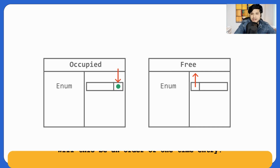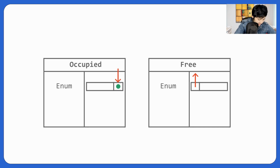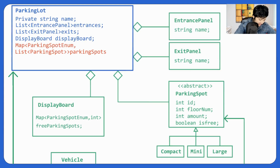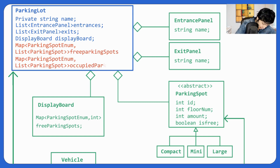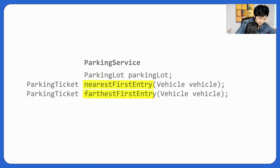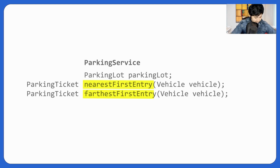This would actually be O(1) time for entry. So we need to add two more data members to our parking lot: one for free parking spots and one for occupied parking spots. This resolves things in a far better way. Entry for nearest first and farthest first is now sorted in O(1) operation.